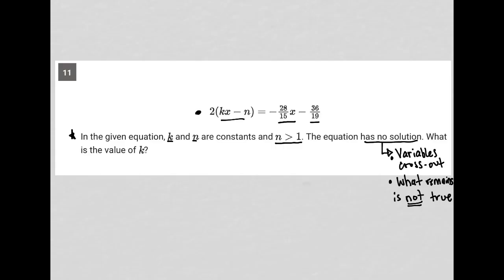So to do that I am going to distribute this 2 so that I have 2kx minus 2n equals negative 28/15 x minus 36/19.